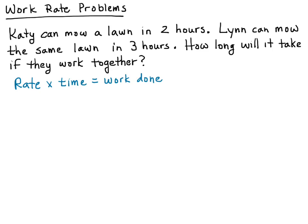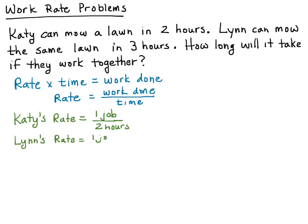We don't have a rate for anybody here, so we have to establish what the rate is—that's the tricky part of these problems. The rate is the work done divided by the time. Katie's rate is one job in two hours, so her rate is 1/2 a job per hour. Lynn's rate is one job in three hours, so her rate is slower—it's 1/3 of a job per hour.